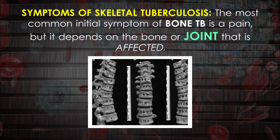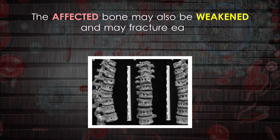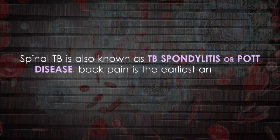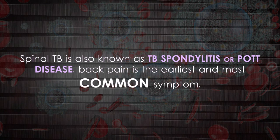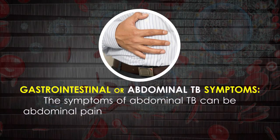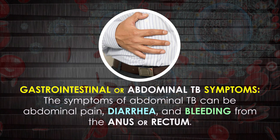The most common initial symptom of skeletal tuberculosis is pain, though it depends on the bone or joint affected. The affected bone may be weakened and may fracture easily. Spinal TB, also known as TB spondylitis or Pott's disease, presents with back pain as the earliest and most common symptom.